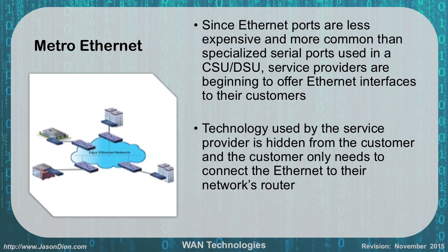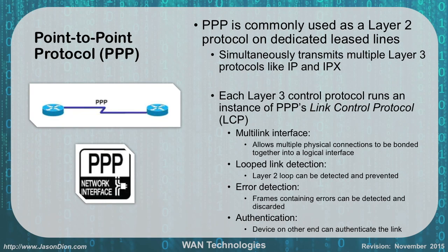Metro Ethernet is available in most major cities and is still rolling out through the rest of the country. Point-to-point protocol is a layer 2 protocol that we use on top of our dedicated leased lines, because the line itself is layer 1. Simultaneously, we're able to use multiple layer 3 protocols like IP or the older IPX over point-to-point protocol. Each layer 3 is run on a separate link control protocol, which is part of PPP's infrastructure.